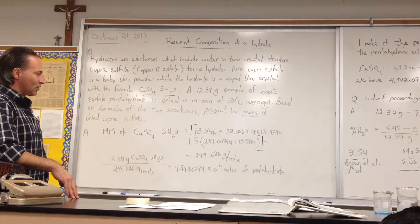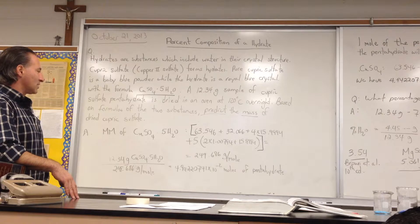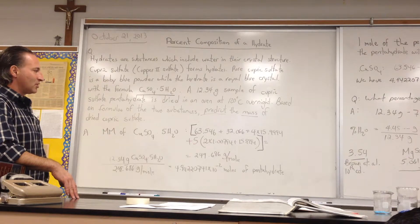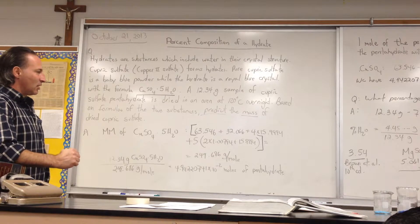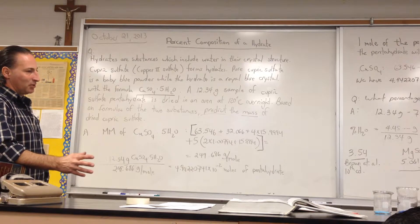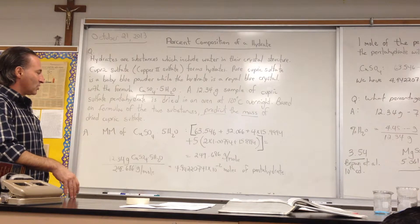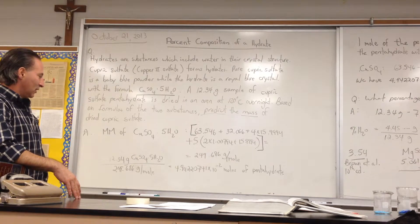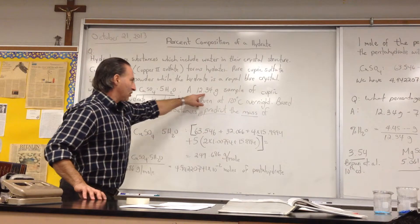So the first thing we're going to do to answer the question is find out what the molar mass of cupric sulfate pentahydrate is. Remember, in chemistry, very often, if you go to moles, you're probably already on the way of solving the problem. So we're going to find out how many moles of cupric sulfate pentahydrate we have to begin with. And that is in that 12.34 grams.